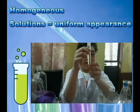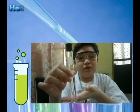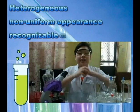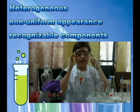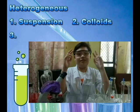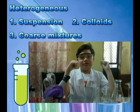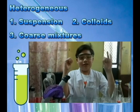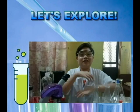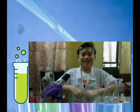Mixtures can also be classified into two types: homogeneous and heterogeneous. Homogeneous mixtures are like solutions — they have a uniform appearance. Heterogeneous mixtures have a non-uniform appearance and you can recognize each substance. These are further classified into three types: suspensions, colloids, and coarse mixtures. Let's explore around the house and see more pure substances and mixtures.